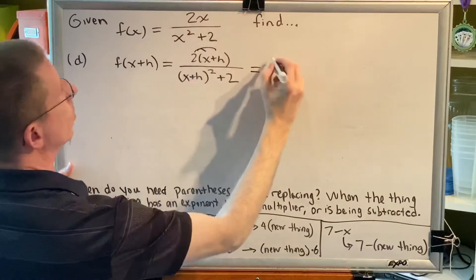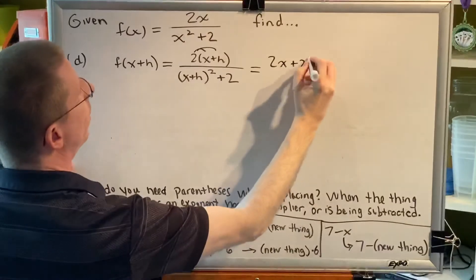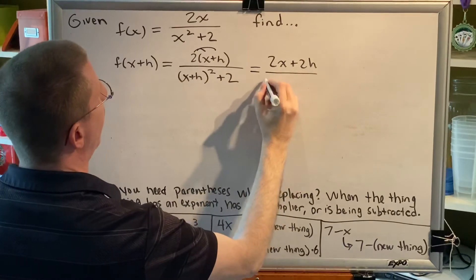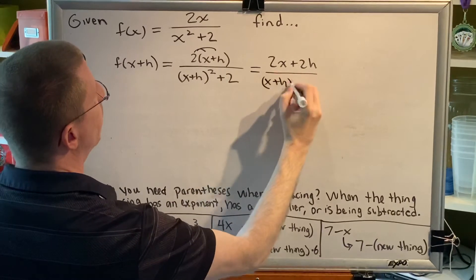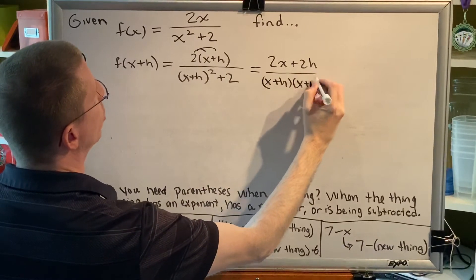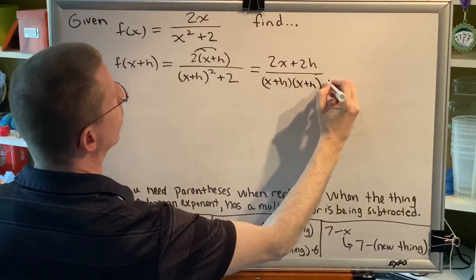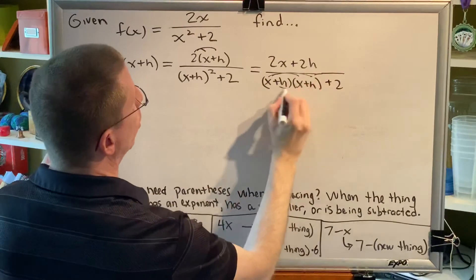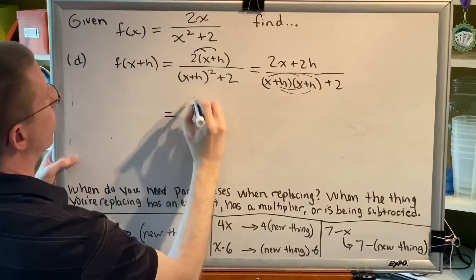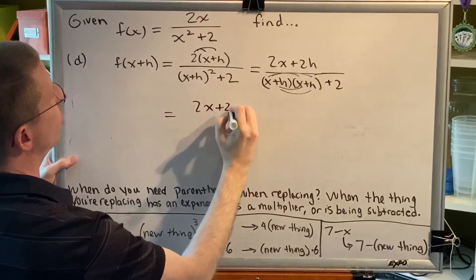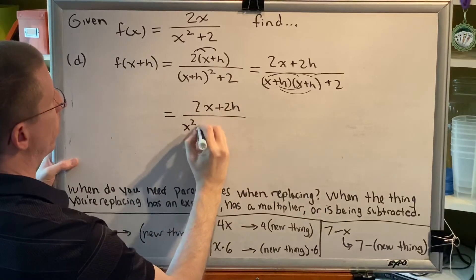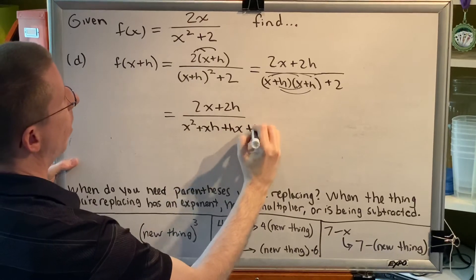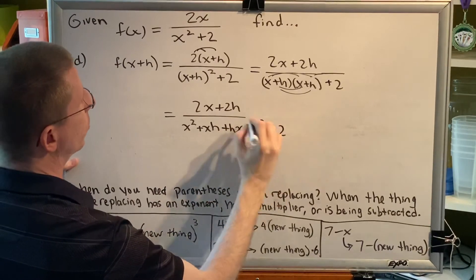At the top, we distribute 2x plus 2h. At the bottom, we FOIL. This will be an x plus h times another x plus h. And when we FOIL this, we get 2x plus 2h over x squared plus xh plus hx plus h squared plus 2.